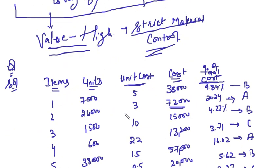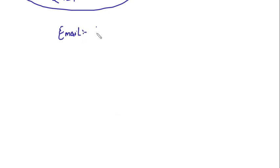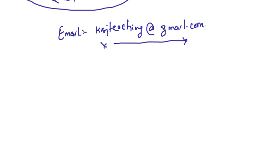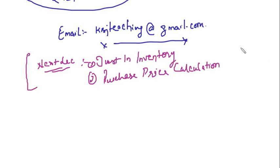This is how ABC analysis is done. I hope this is clear. If you have any queries, you can always send me an email at ksjteaching@gmail.com. That is all for this lecture. In the next lecture we will most probably cover two small topics: Just-in-Time inventory and purchase price calculation. Thank you so much.